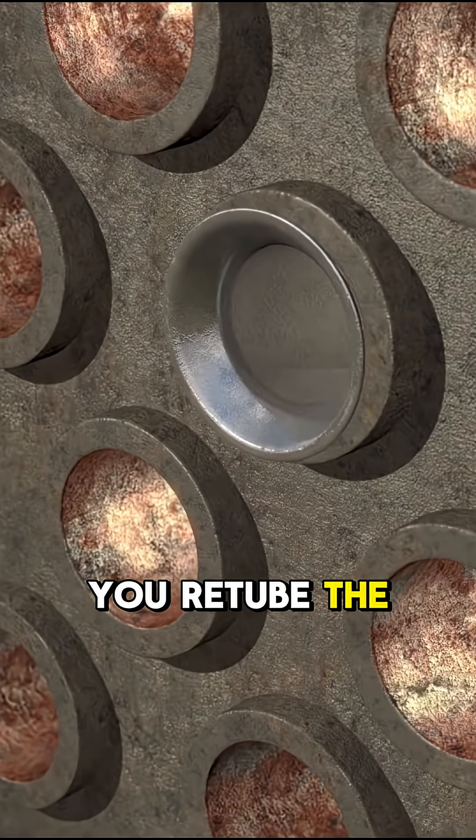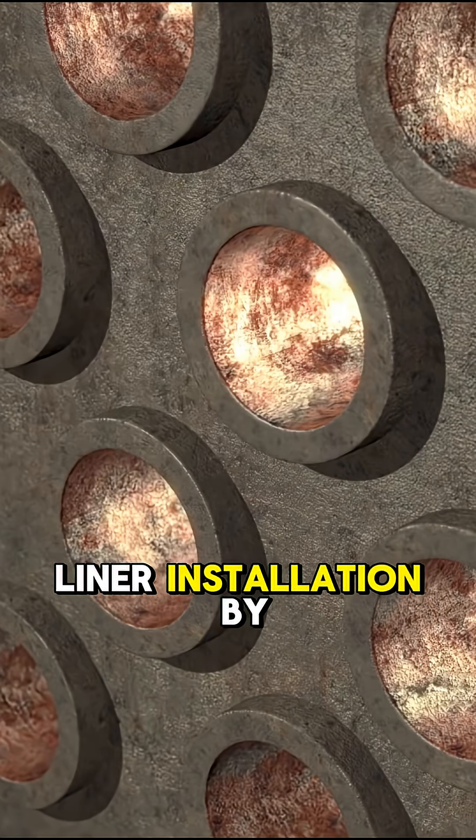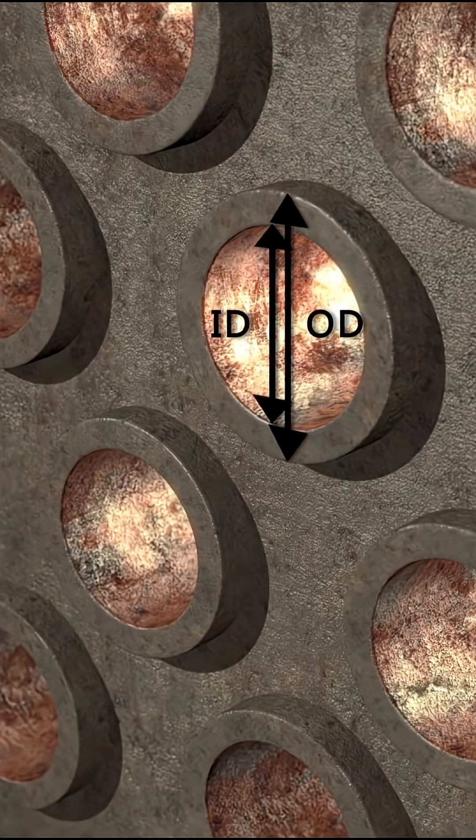Traditionally, you retube the unit or replace the whole thing. But there's a smarter fix: liner installation by Corn International.